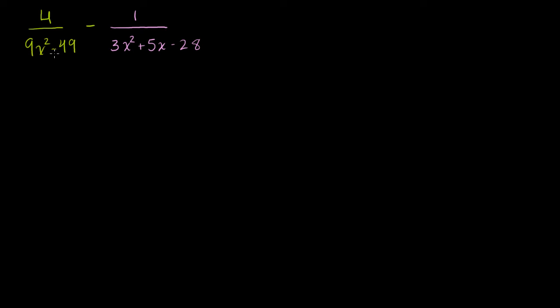Now this first expression you might recognize is a difference of squares. This is 3x squared minus 7 squared. So we can rewrite it as 4 over 3x plus 7 times 3x minus 7. 3x squared is 9x squared, 7 squared is 49. Difference of squares.